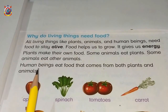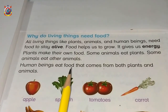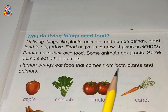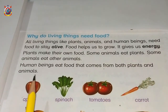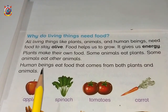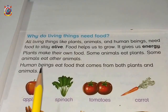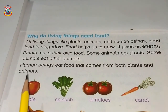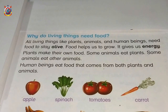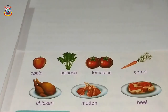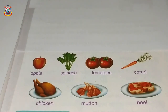Human beings eat food that comes from both plants and animals. Do you know, students? Human beings — yaani ke hum insaan — jo food khaate hain wo aati hai both plants and animals se. It means the food we eat comes from both plants and animals — plant se bhi milti hai, animal se bhi milti hai. So students, now you can see there are so many pictures on this page 5, and these all are food items.